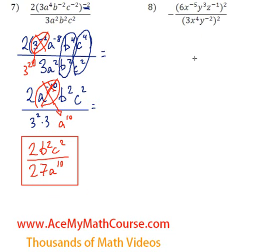Now, how about question 8? Again, I'm going to apply the power of 2 to every component within the parenthesis. 6 squared is 36. I'll expand it. So 36. Now x to the power of negative 5 squared is just x to the power of negative 10. y cubed squared is just y to the 6 since 3 times 2 is 6. z to the negative 1 squared is z to the power of negative 2, because negative 1 times 2 is negative 2.